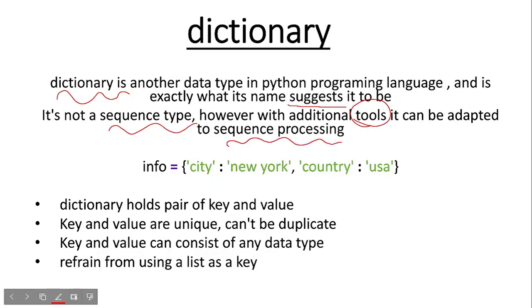Down below we have the first example of a dictionary. First we have a variable called info, then the assignment operator, the equal sign, and then we have curly brackets, opening and closing curly brackets. Inside the curly brackets we have a pair of key and values separated by colon.